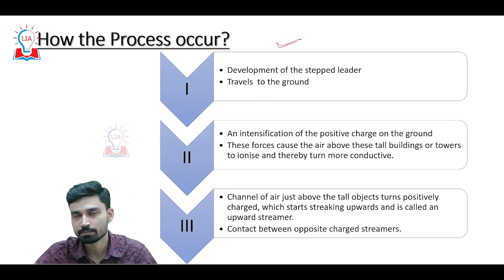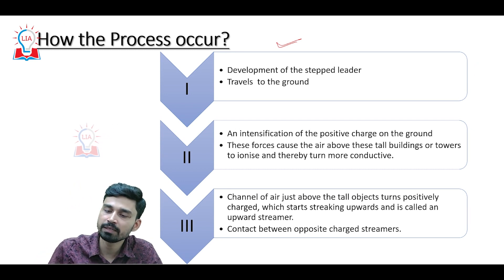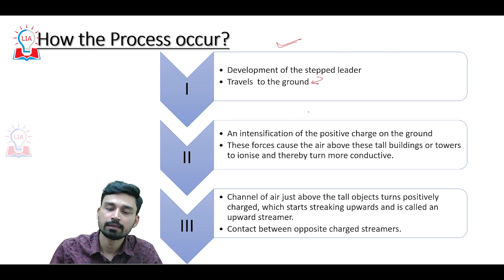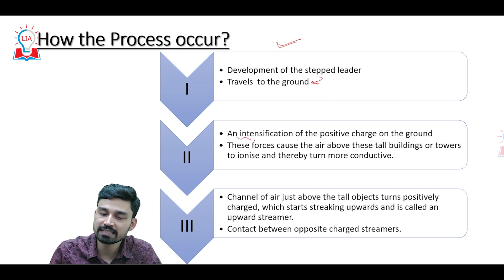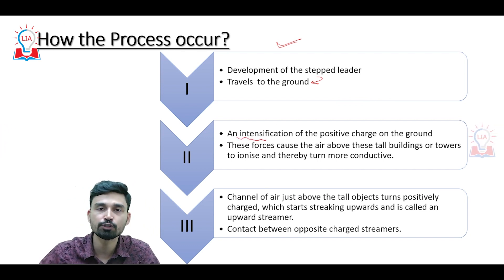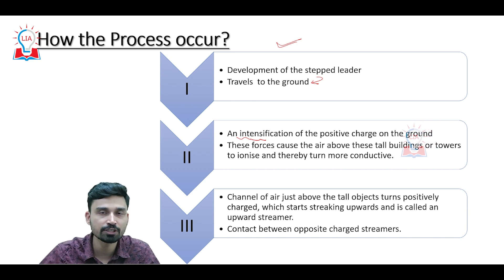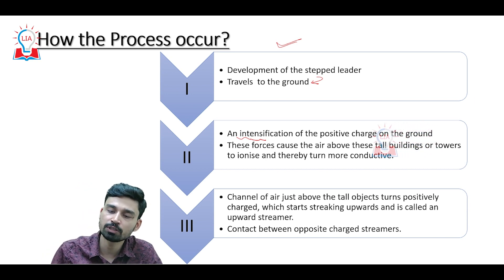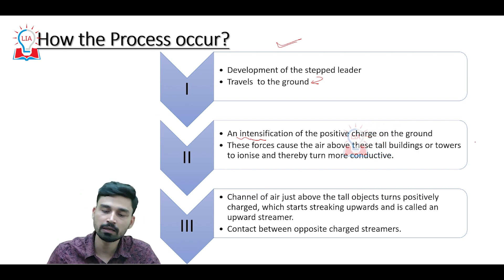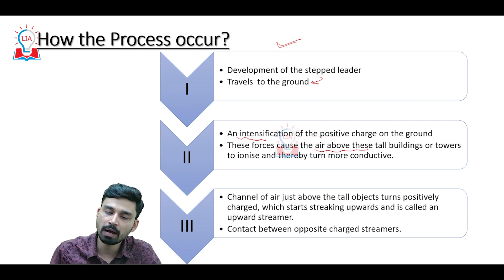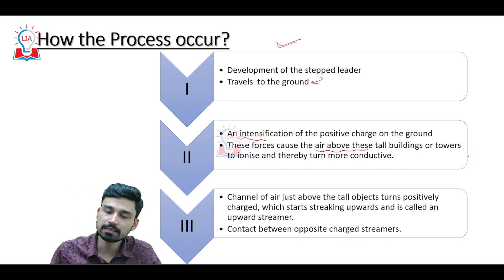The overall process of upward lightning can be classified into three stages. In the first stage, the step leader develops and starts to travel toward the ground. In the second stage, as the step leader moves toward the ground, there is an intensification of positive charges on the ground surface. With a huge amount of negative charge in the step leader near the earth's surface and intense positive charge on the ground, electrostatic forces cause the air above these tall buildings or towers to become ionized and more conductive.